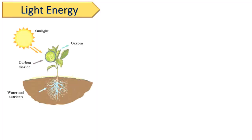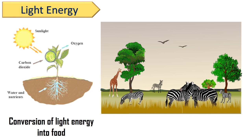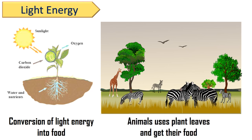Now, we will see light energy. We know plants produce their food in sunlight. It means that plants convert light energy into energy stored in food. And animals use plant leaves as food and get the energy to perform their work. From this, we can say that light is a form of energy.